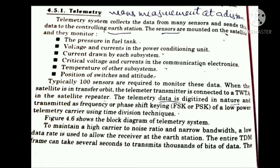The main function of telemetry is measurement at some distance. The telemetry system collects data from many sensors mounted on the satellite and sends this data to the controlling earth station. The sensors monitor: pressure in the fuel tank, voltage and current in the power conditioning unit, current drawn by each subsystem, critical voltage and current in the communication electronics, temperature of other subsystems, and the position of switches and attitude. Typically, 100 sensors are required to monitor these types of data.